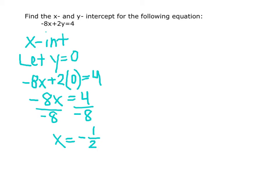Since we began with letting y equal 0, our coordinate is going to be negative 1 half comma 0. This is our x intercept.